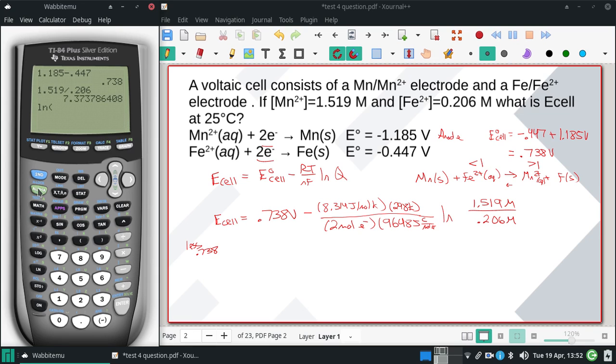Take the natural log of that, then multiply by 8.314 and 298, and divide by 2 and 96,485.